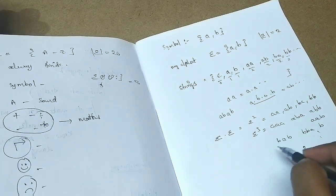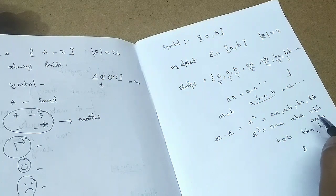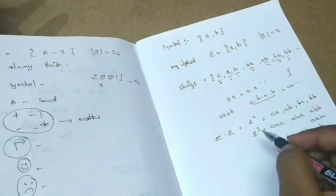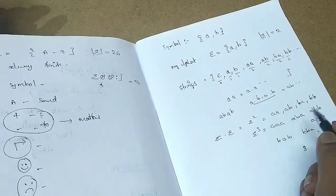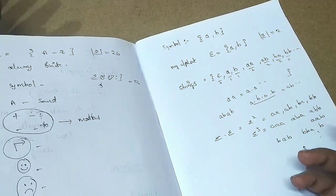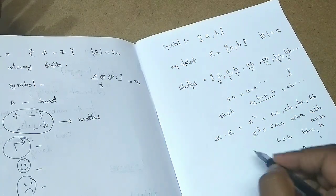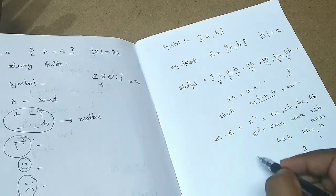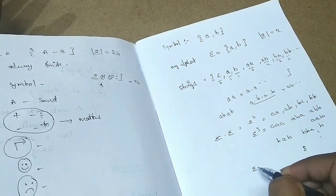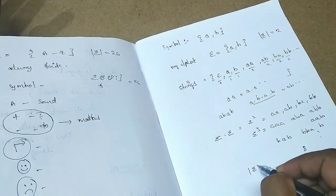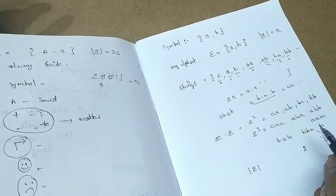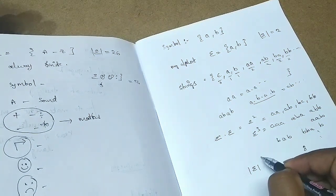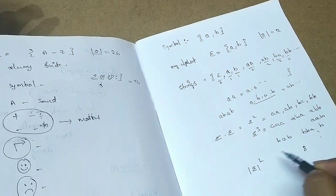This is a formula: whenever you are concatenating to get strings of a certain length, the number of strings of that length will be |Σ| raised to the power of the length of the string.